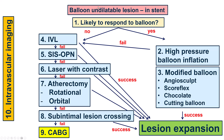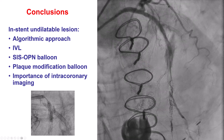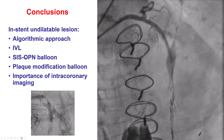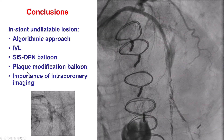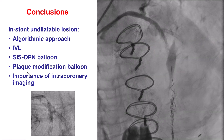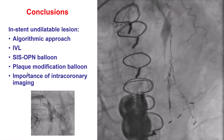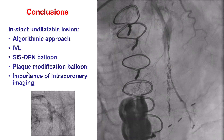So an algorithmic approach is critical for in-stent undilatable lesions: high-pressure balloons, plaque modification balloons, IVL, very high-pressure balloon, laser, etc. In this case, those steps — the high-pressure balloon, the plaque modification, IVL, and the OPN balloon — were sufficient for expanding this balloon-undilatable lesion. Following an algorithmic approach, using the tools that are available, and performing intracoronary imaging to determine the response to treatment are important for every complex lesion, especially those that are heavily calcified and especially those that are balloon undilatable.